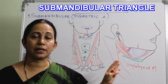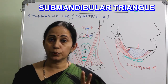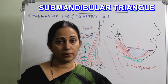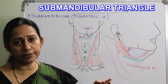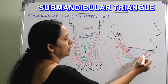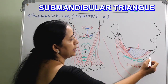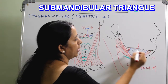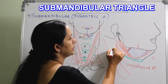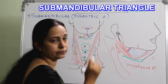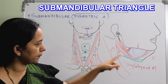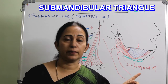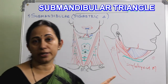The posterior belly is supplied by the facial nerve. This is because the digastric muscle has two developmental origins from different pharyngeal arches. So the anterior belly is supplied by the fifth nerve and the posterior belly is supplied by the seventh nerve — the facial nerve — which you should remember due to their development from different arches.